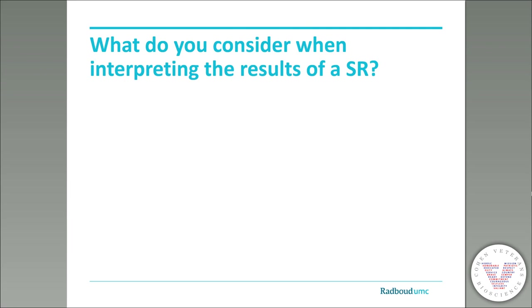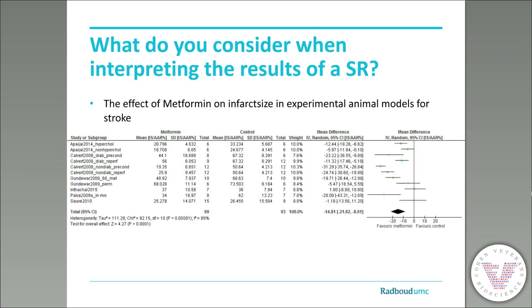We can say that metformin significantly decreases infarct sizes because the zero effect line is not included in the 95% confidence interval. But how do we really interpret these results? Some consider the number of studies or patients, others focus on heterogeneity levels or look at overlap between confidence intervals, or they look at the actual effect size and its precision. Some may not include all of these factors, or forget a few — and this is where GRADE comes in.